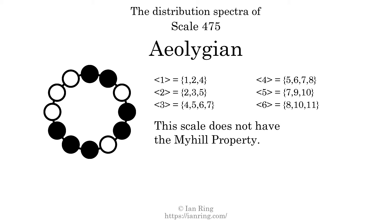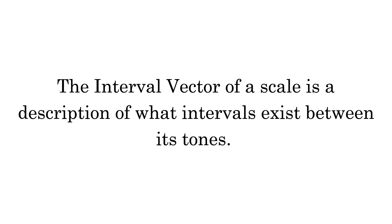If every spectrum has exactly two specific intervals, we call that the Myhill property. This scale does not have the Myhill property. Since the generic interval ranges overlap, this scale is an improper scale.